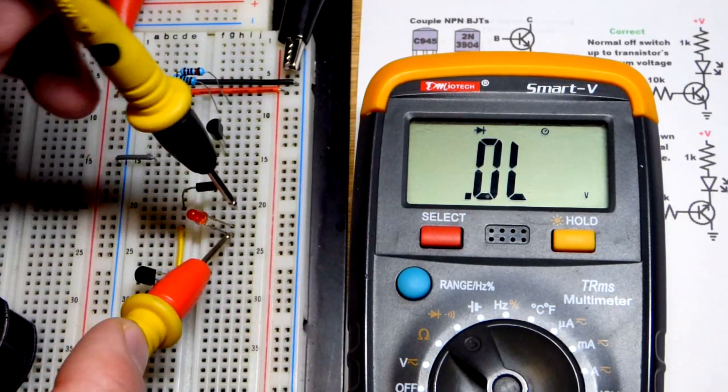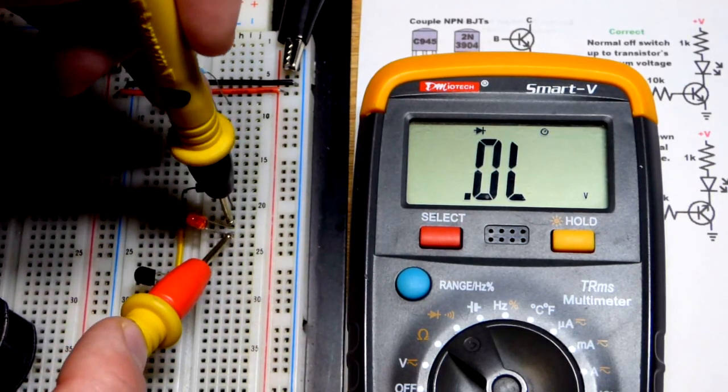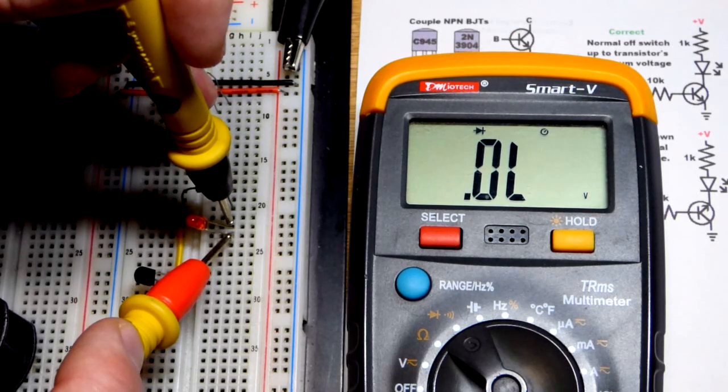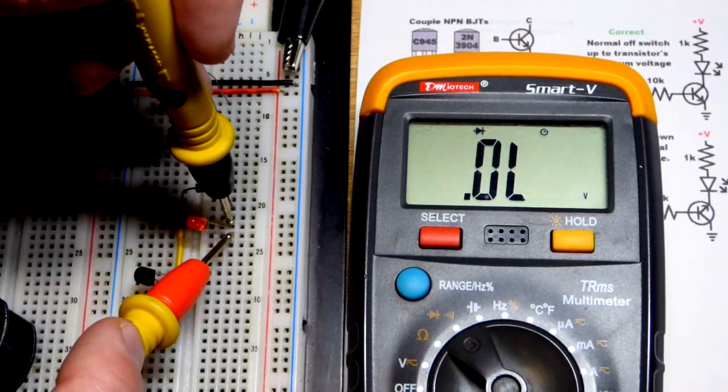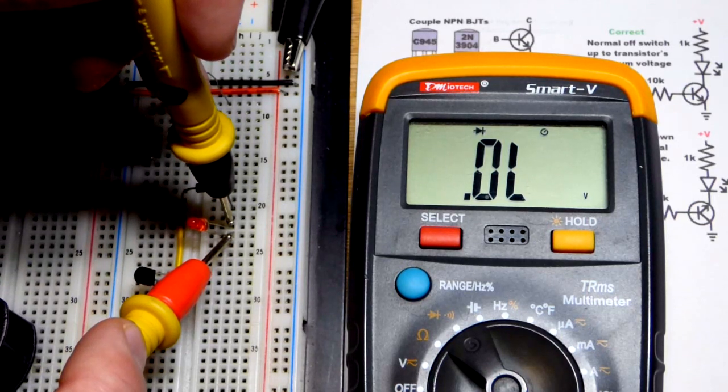If I reverse the probes there, so now I got the red probe to the short lead, the cathode, long lead, the anode to the black probe there, you can see that right now it's reverse bias.